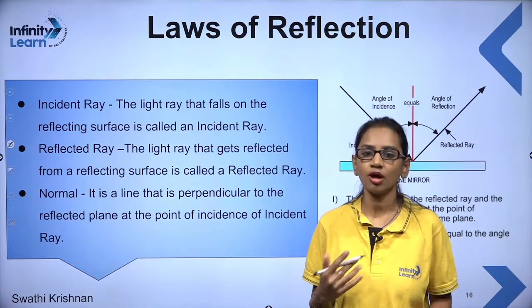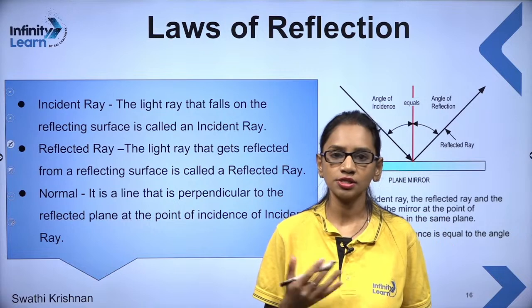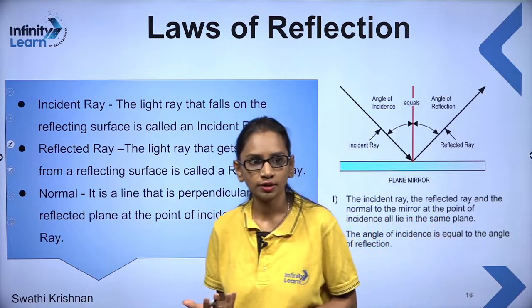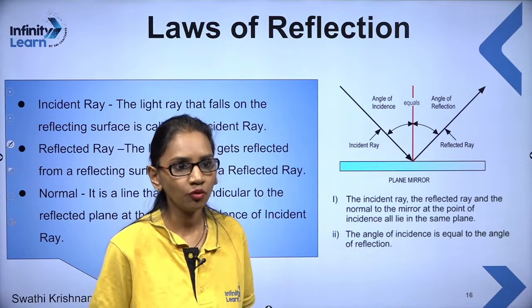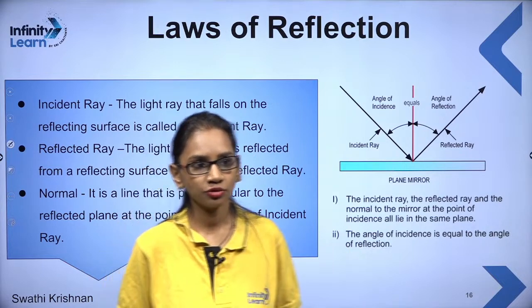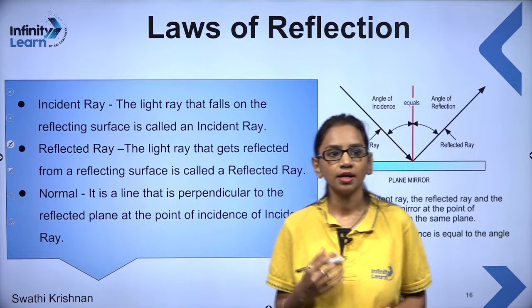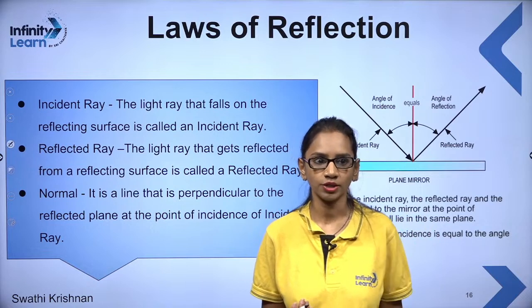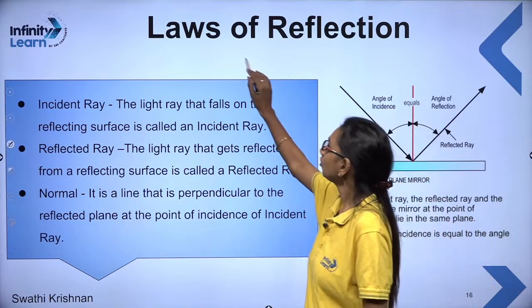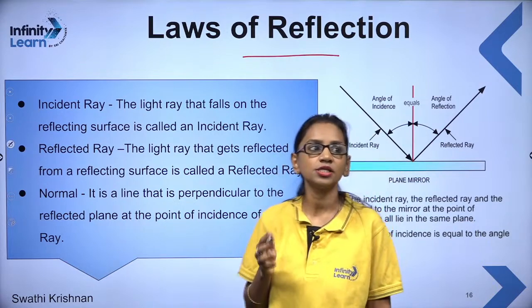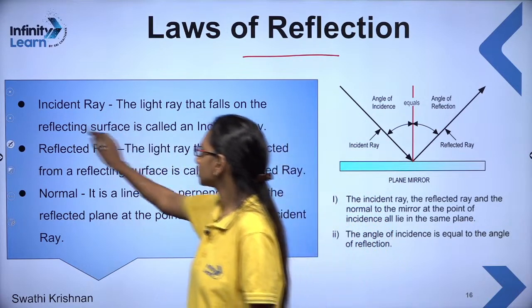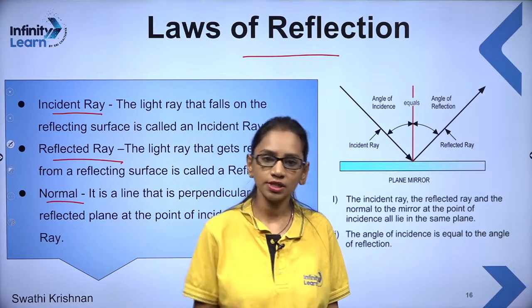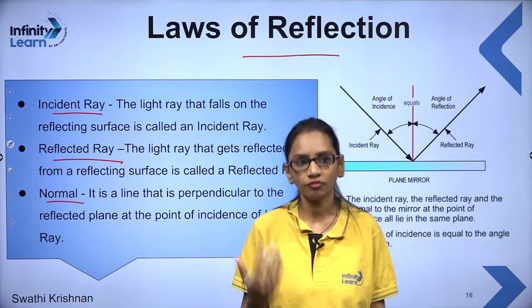Now a very important topic — laws of reflection. We have learned that reflection is the bouncing back of light. Reflection follows certain laws. Before studying the laws of reflection, we must understand three important things: the incident ray, the reflected ray, and the normal. We also need to understand angle of incidence and angle of reflection.